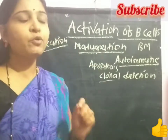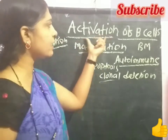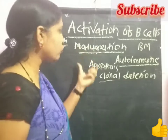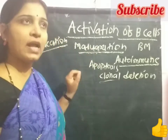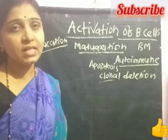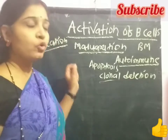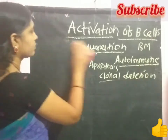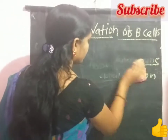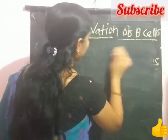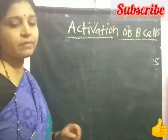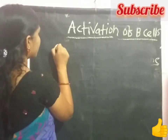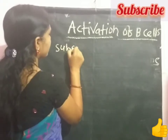Today we are focused on the activation of B cells. After the maturation stages, there is transfer of these mature B cells from the bone marrow towards the secondary lymphoid organ. Before switching to the activation of B cells, we will first discuss the subsets of B cells.